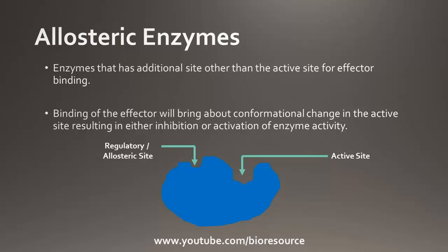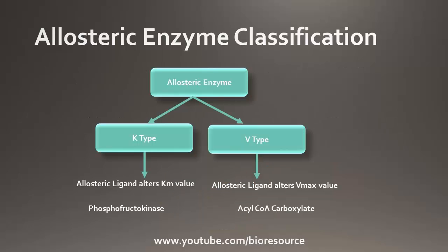Allosteric enzymes do not show Michaelis-Menten kinetics, and the enzyme kinetic graphs will be sigmoidal rather than hyperbolic. Allosteric enzymes can be classified into two types: K-type and V-type.